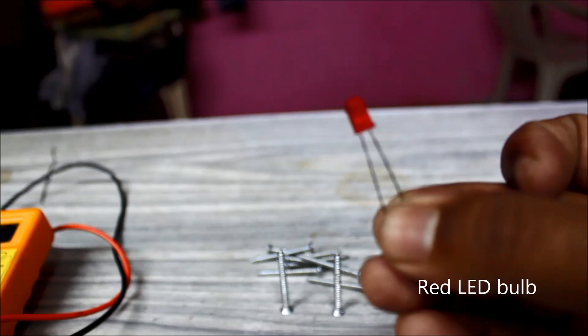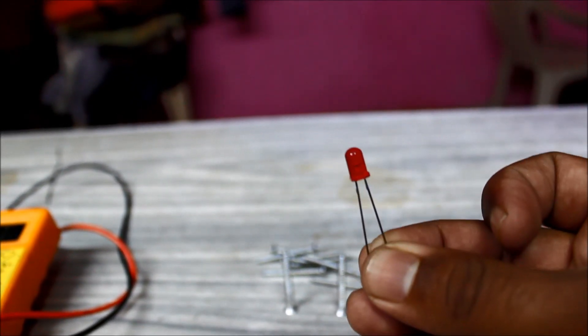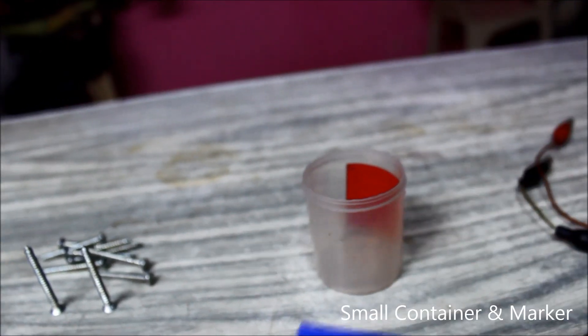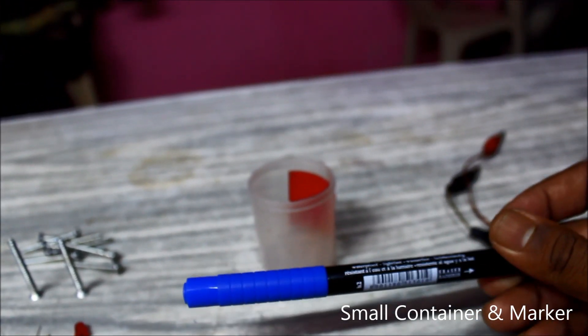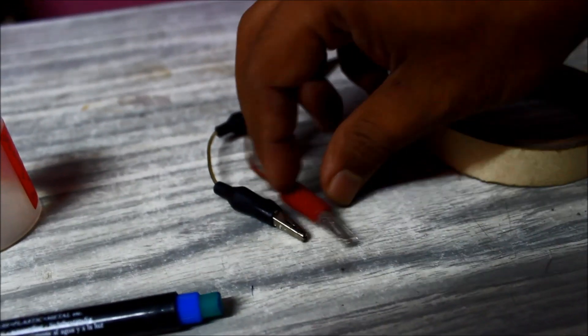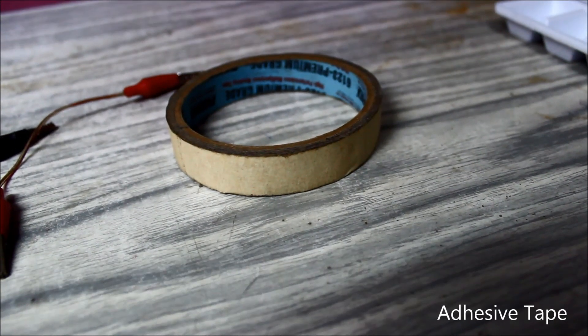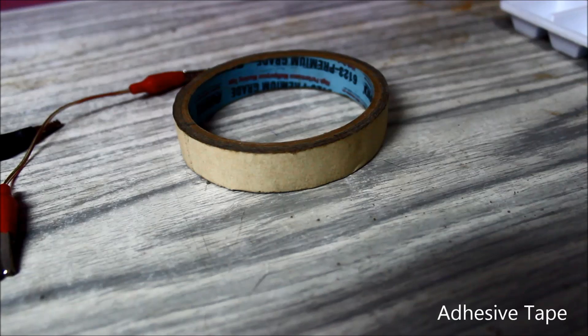Preferably a red LED because it requires less voltage than the white ones. You'll also need a small container, a marker, a few jumper cables that I've prepared to secure the connection, adhesive tape, and a refrigerator ice tray.